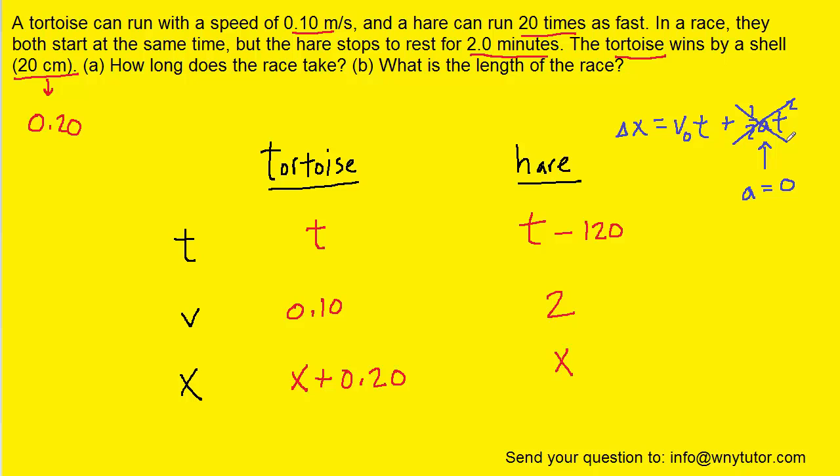And that means that this entire term right here is going to disappear. Therefore we can see that the distance that the objects travel in this problem is equal to their speed multiplied by their time. And that's an important idea here, because we're going to take the distance that each object travels, and we're going to set it equal to the speed of the object multiplied by the time that the object travels.